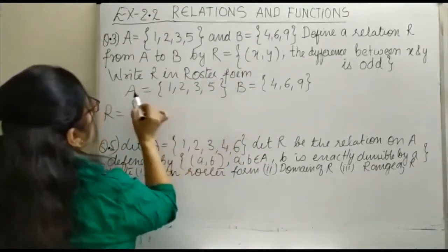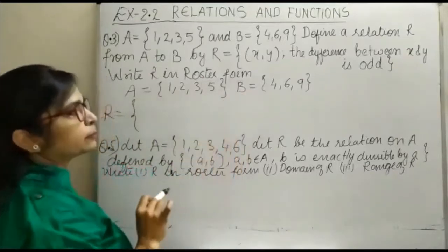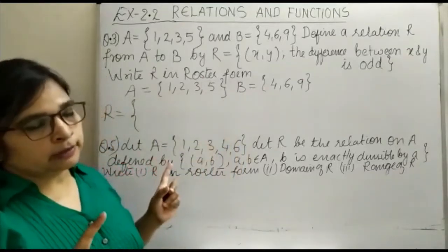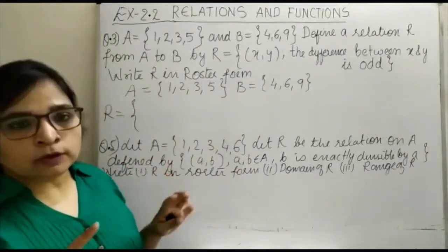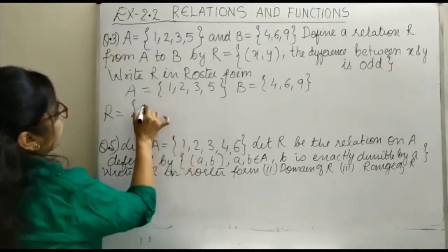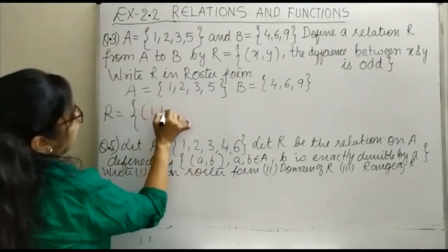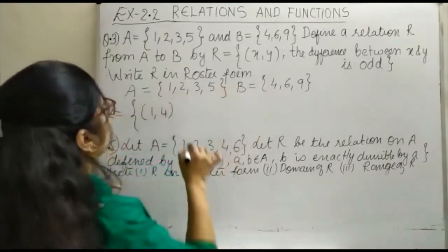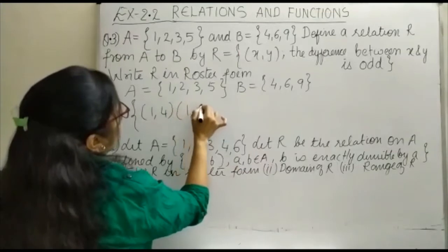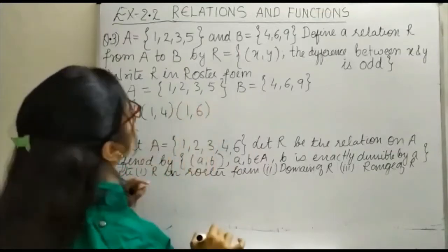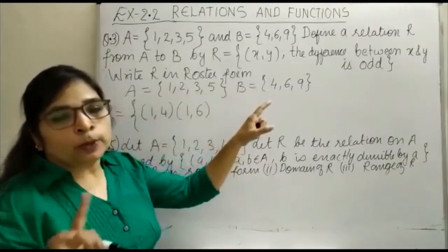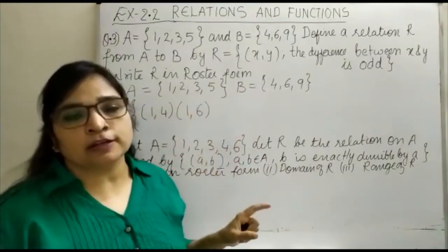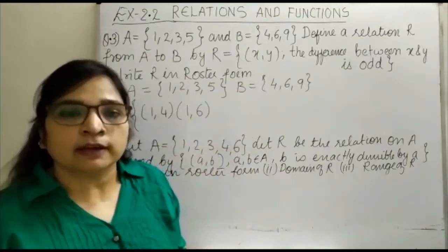When we take A cross B, which one comes with 1? First let's see: 4 minus 1 = 3, so 1 and 4 will be an element. Then 1 and 6 will be an element, so our difference will be odd, so we will get (1,6). What about (1,9)? (1,9) will not be an element of the relation because the difference is even.